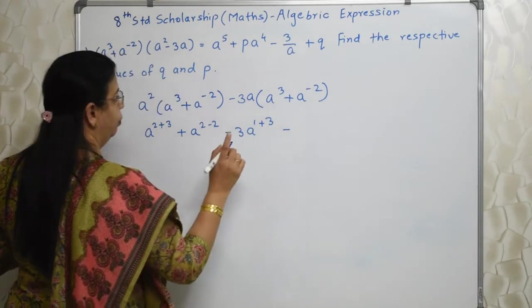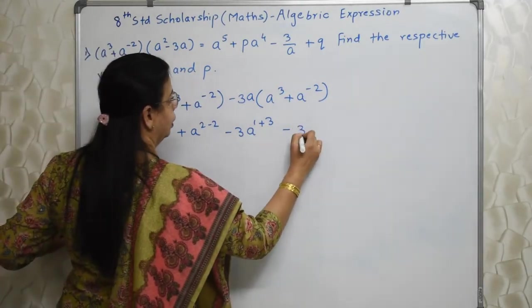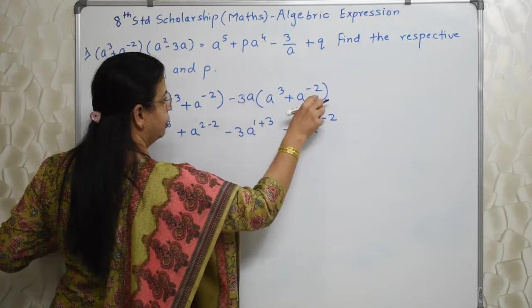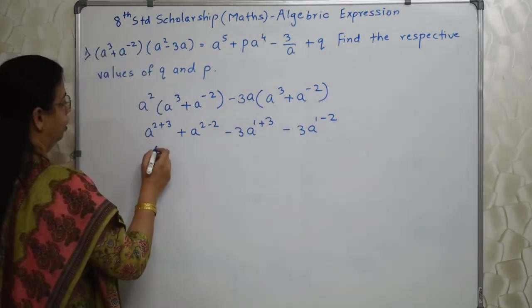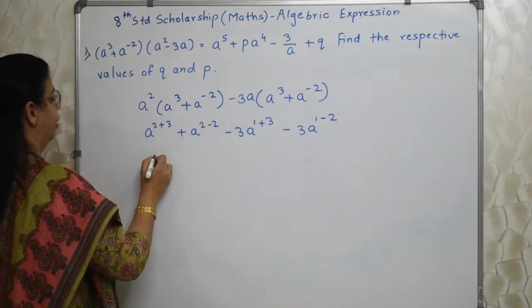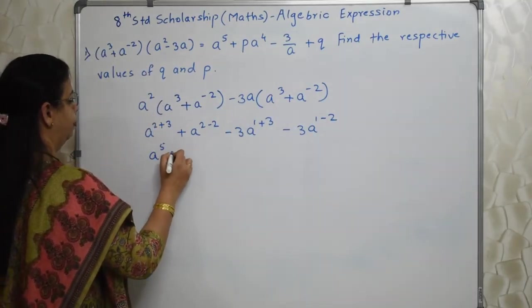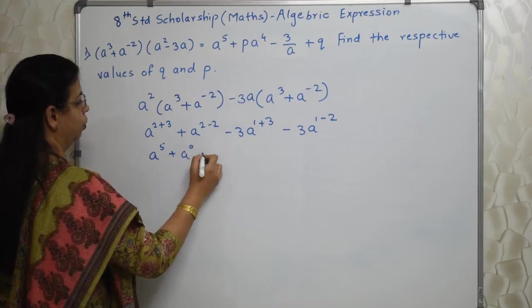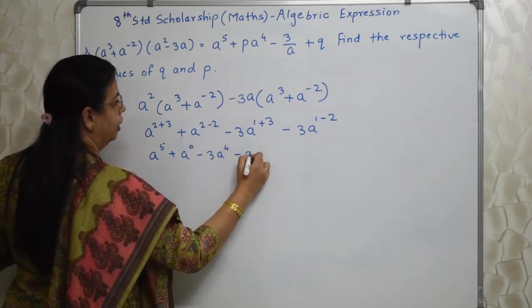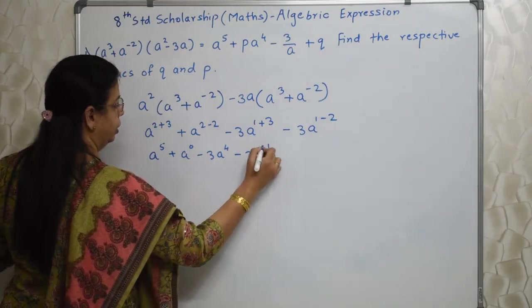Please be careful with the signs. 3A to the 1 minus 2. This is 1, this is minus 2. So we are adding the indices. So this is A raise to 5 plus A raise to 0 minus 3A raise to 4 minus 3A raise to minus 1.